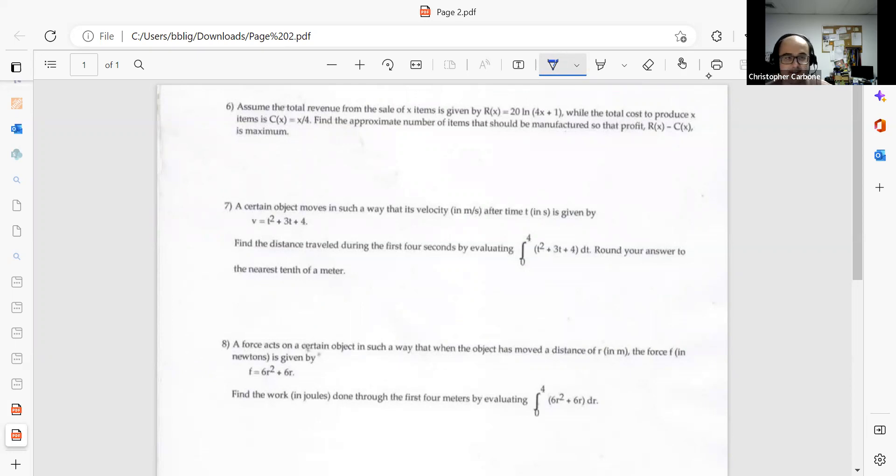The profit P of x minus C of x is maximum. That profit would be 20 times the natural logarithm of 4x plus 1 minus x divided by 4. And when we take the derivative of this profit function, we would get 80 divided by 4x plus 1 minus 1 fourth.